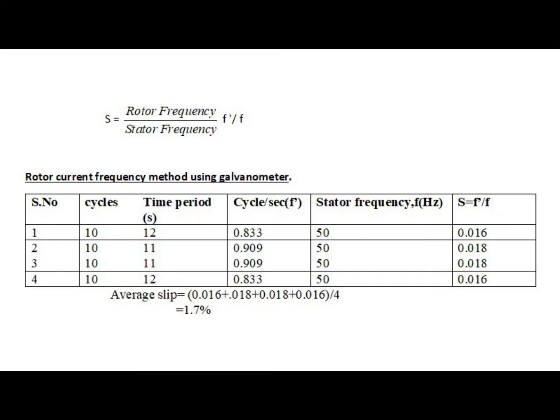We found the rotor current frequency by counting 10 cycles and noting down its time period. Then in order to find slip, we divided our rotor frequency by the stator frequency. The stator frequency is 50 Hz, so after putting our values, we found an average slip of 1.7%.